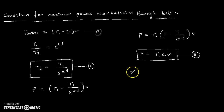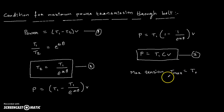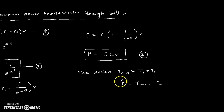Now we analyze the maximum tension in the belt, which was discussed in the previous video. T_max equals the tension in the tight side when centrifugal tension is neglected. However, considering centrifugal tension Tc during rotation of the pulley, T_max = T1 + Tc. From this, T1 = T_max minus Tc. Assume this as Equation 4.